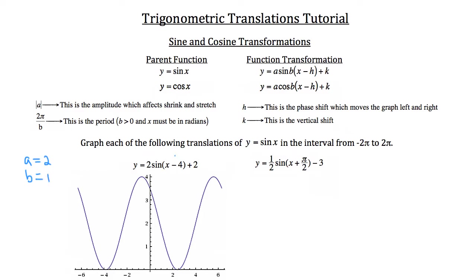Our h value is always the opposite of what's written, because it's x minus h. So if we have x - 4, then h must be 4 — it's the opposite of whatever sign is in there with that x. Our k is just added on to the end, so with plus 2, our k has a value of 2. Our h = 4 means we're going to shift our graph to the right 4 units, since positive direction on the coordinate plane is to the right.